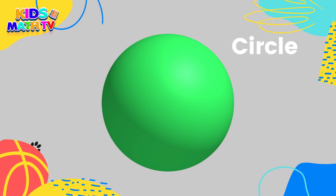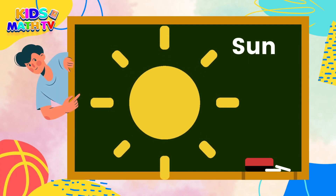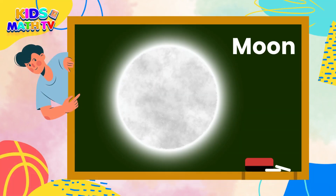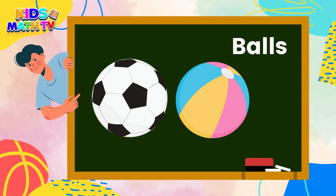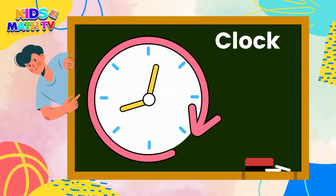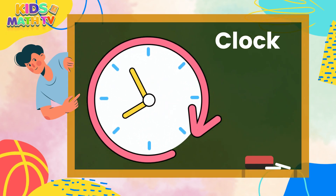Circles are round shapes that have no corners or edges. Some common examples of circles are the sun, the moon, a ball, a cookie, or a plate. Circles can be found in many everyday objects and they are used in many ways. For example, clocks and watches have circular faces and wheels on cars and bicycles are circular.